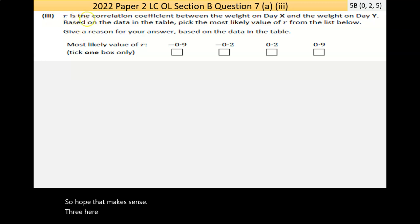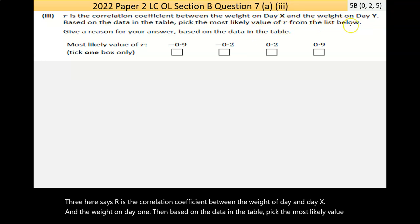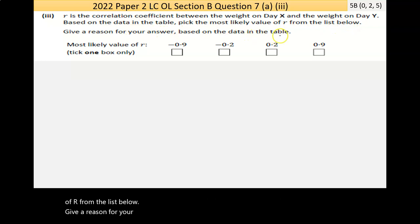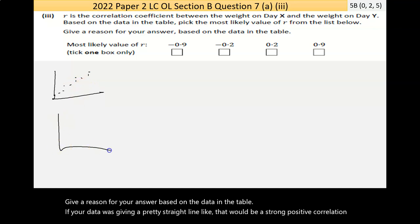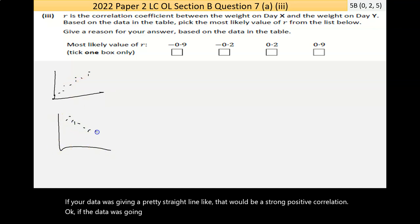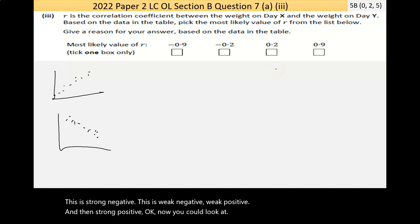And again, it's simply due to those numbers there, and then the peak over here later on. So I hope that makes sense. Part 3 here says, R is the correlation coefficient between the weight on day X and the weight on day Y. Then, based on the data in the table, pick the most likely value of R from the list below. Give a reason for your answer based on the data in the table. Now, if your data was giving like a pretty straight line like that, that would be a strong positive correlation.